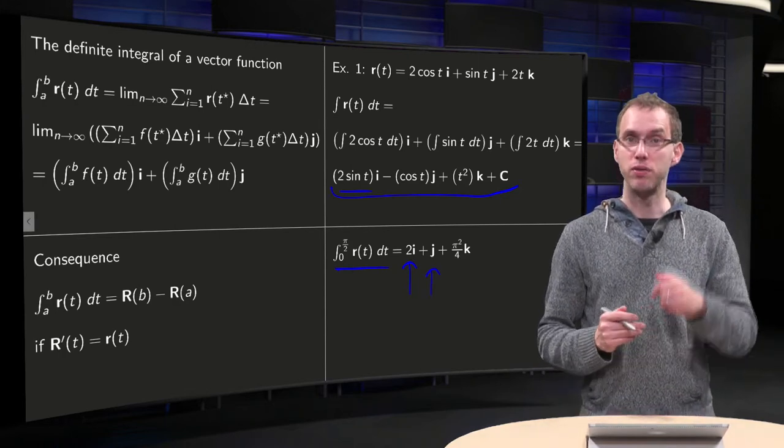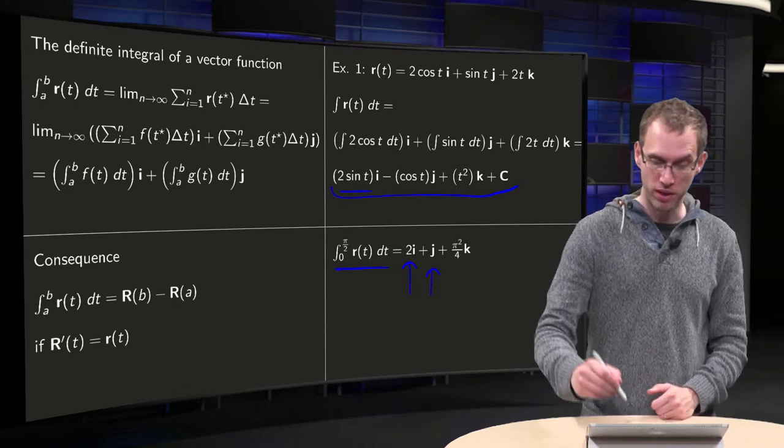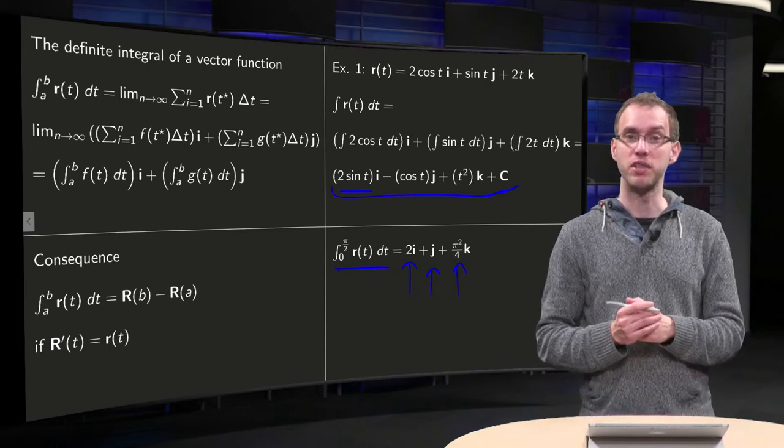And for the t squared, we have on the upper boundary π/2 squared, and on the lower boundary we have 0, so we get π²/4 times k.